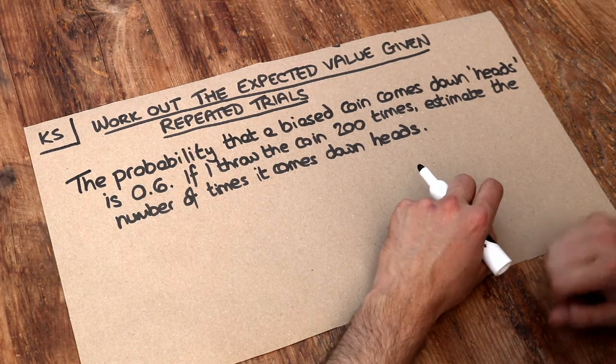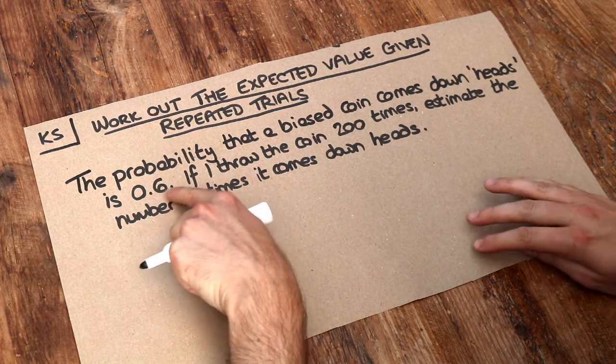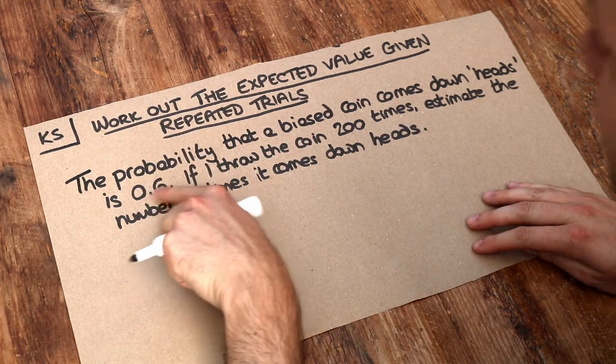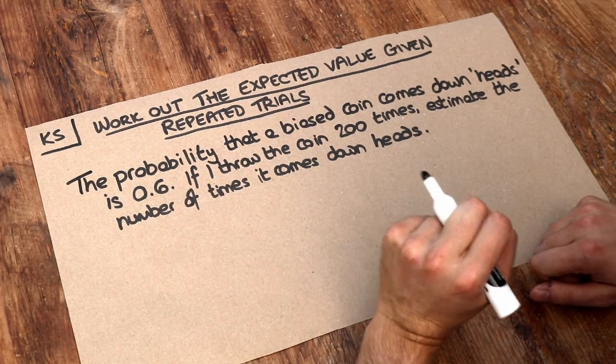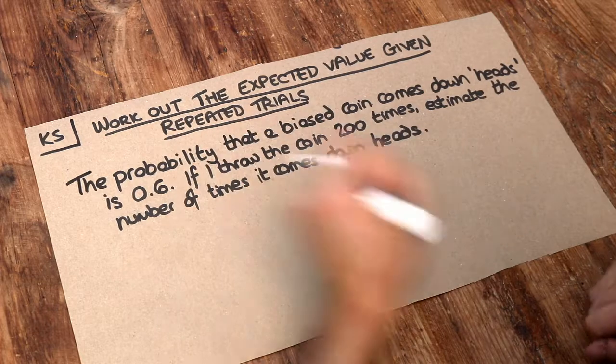Well let's reflect on what a probability of 0.6 actually means. A probability of 0.6 as a percentage is 60%, and that's basically saying we expect the coin to come down heads 60% of the time.